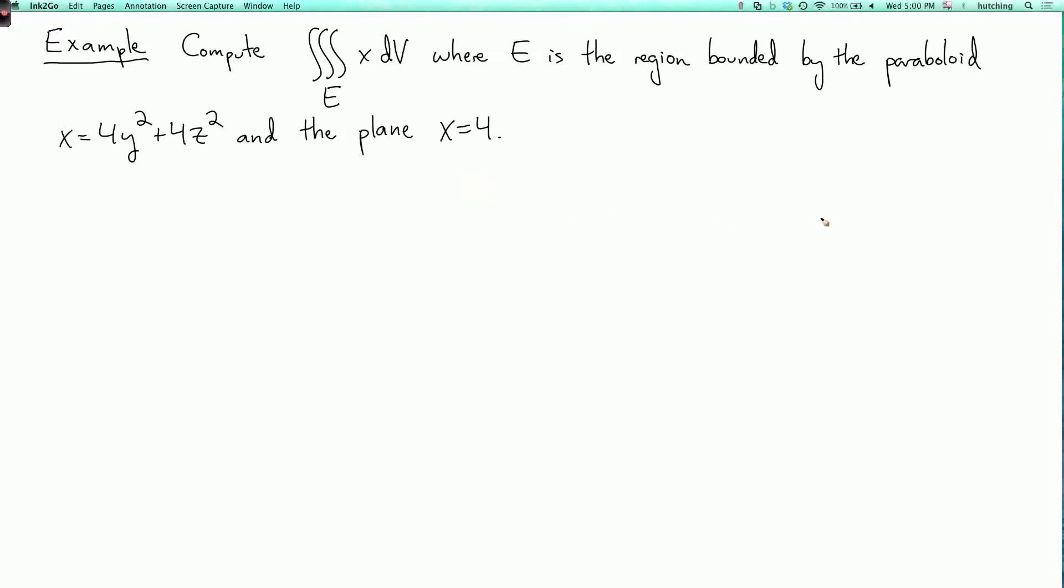So let's start by drawing a picture of this region. So this paraboloid is coming out along the x-axis like this, and we want to go up to x equals 4. So this will be the sort of cap, which is a disk, where x equals 4.